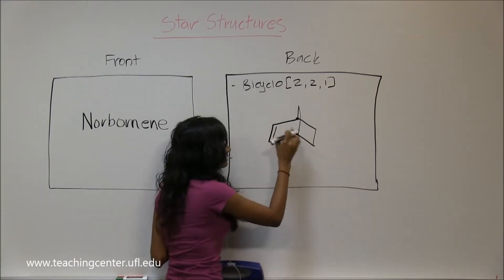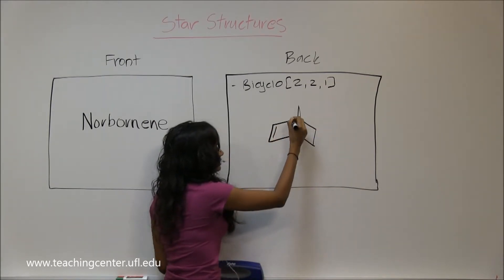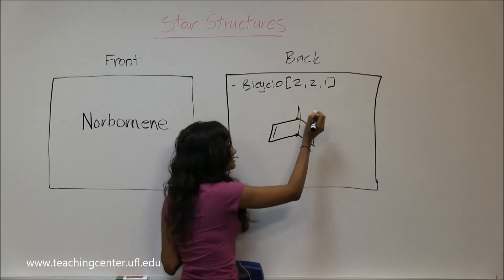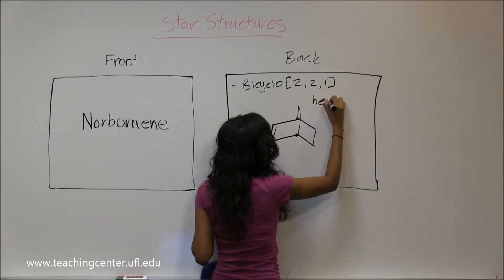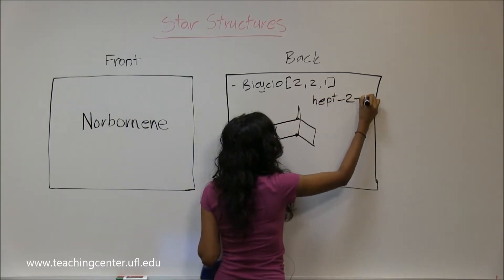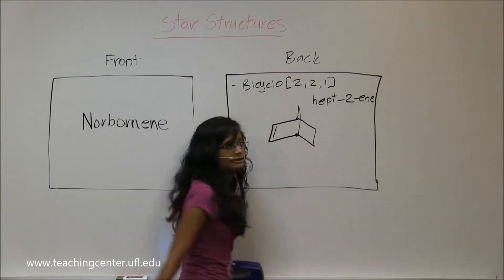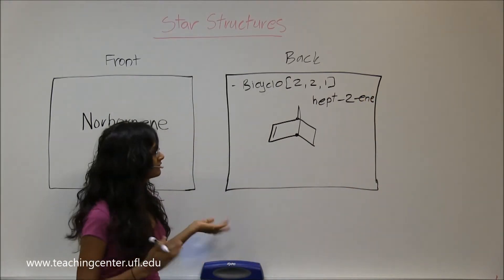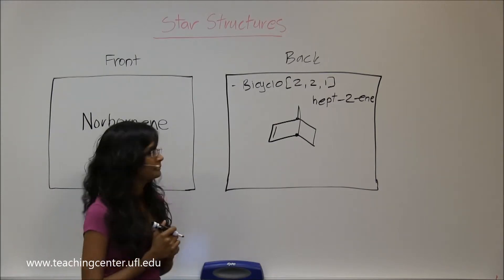And then you have seven carbons and an alkene. You always start from the bridgehead, so hept-2-ene. That's how you would give it an IUPAC name.